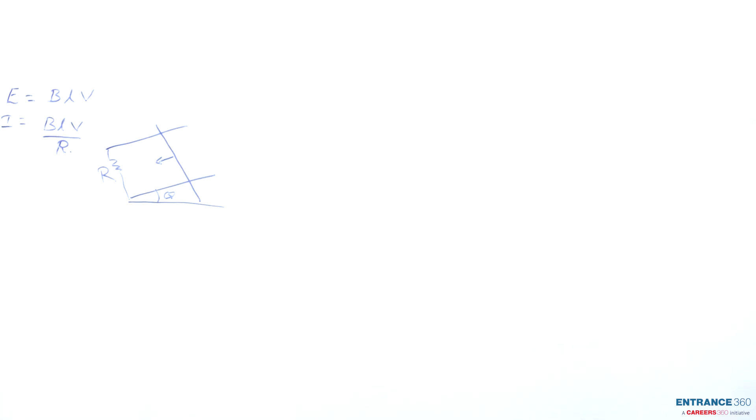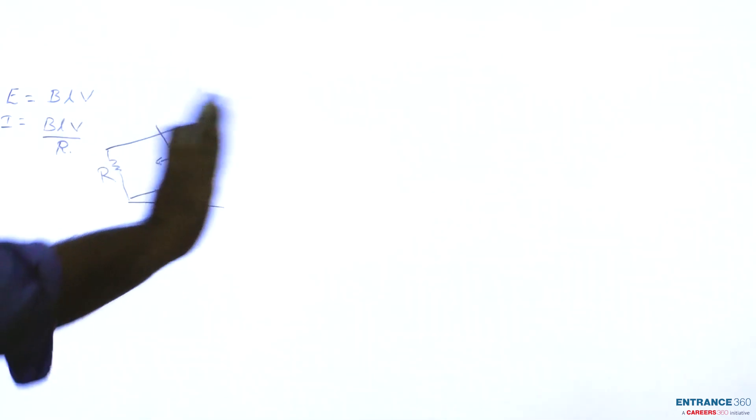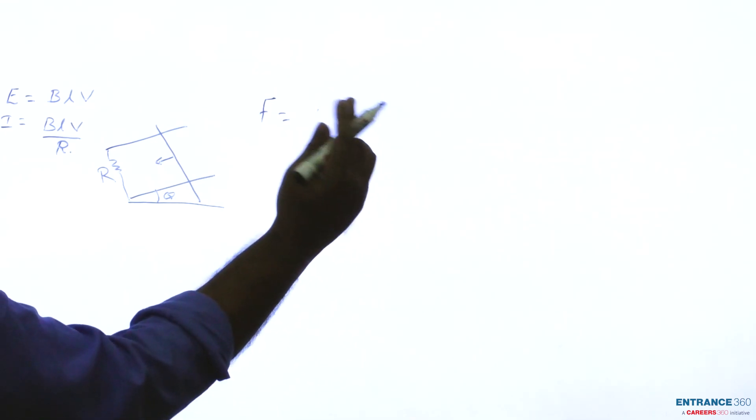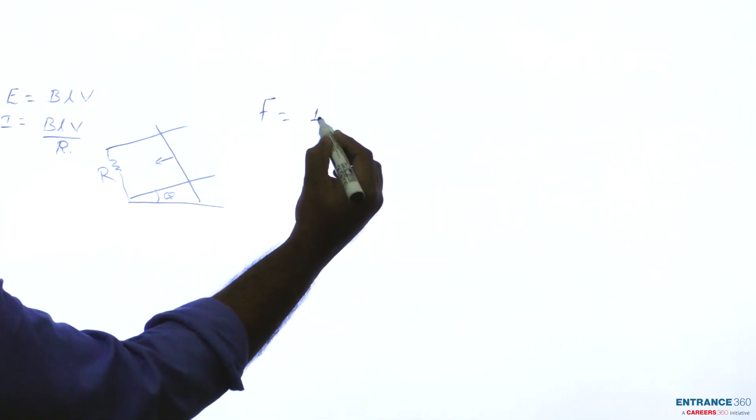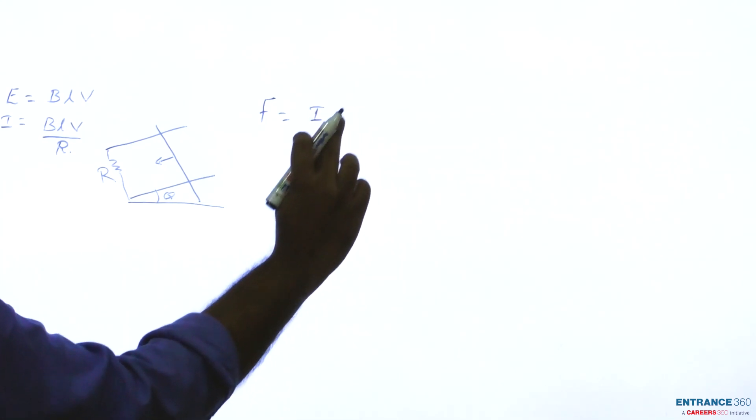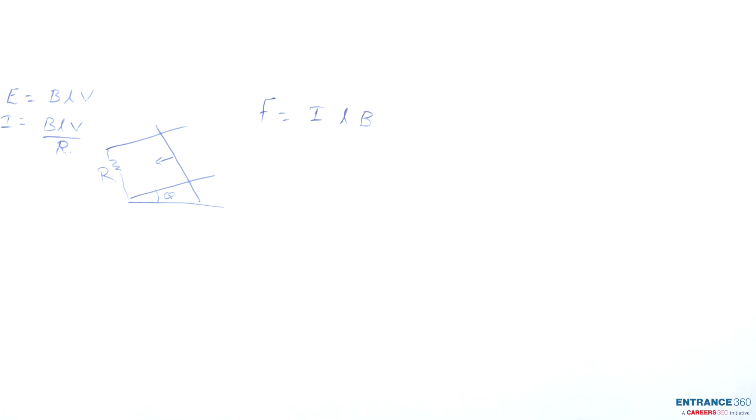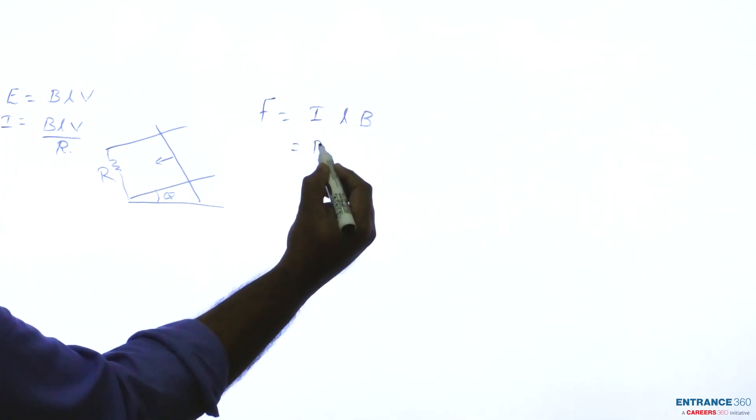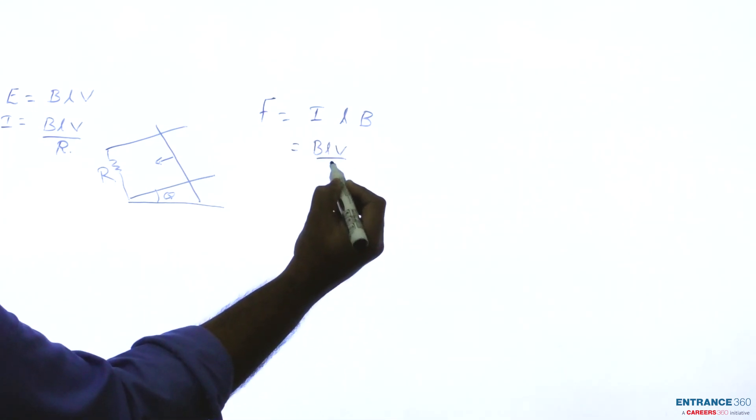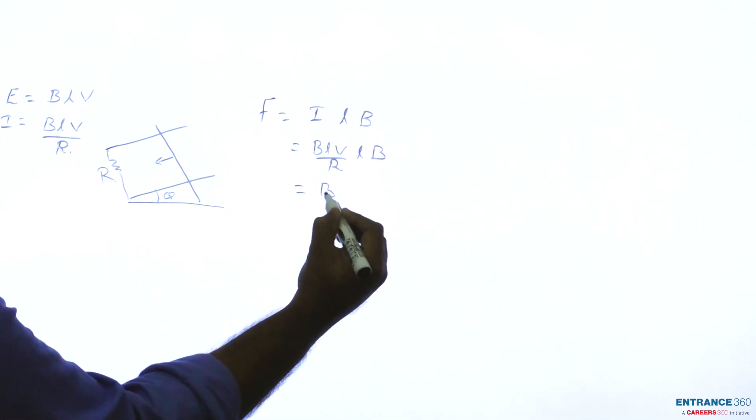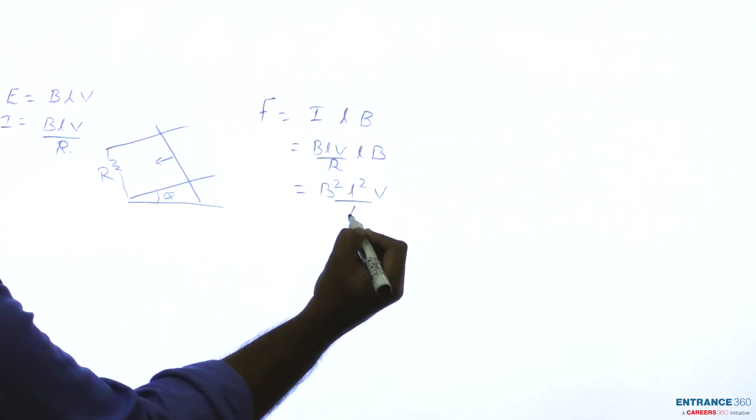So force F equals I into L cross B. Since L and B are at 90 degrees, we can write it as ILB where I is BLV by R. So we can substitute here BLV by R into LB, which will equal B squared L squared V by R.